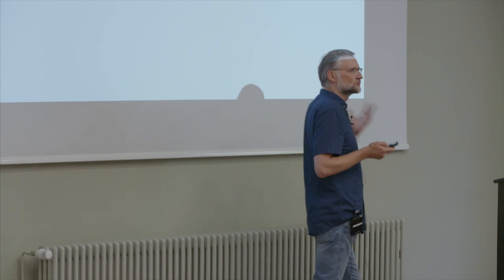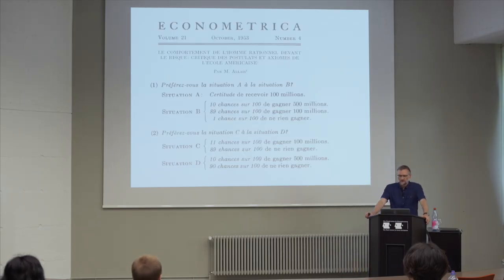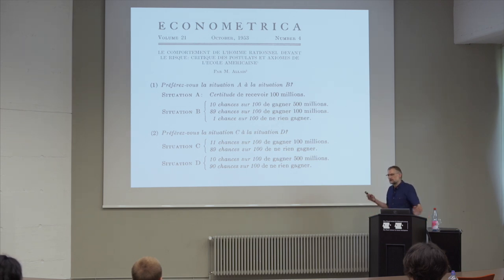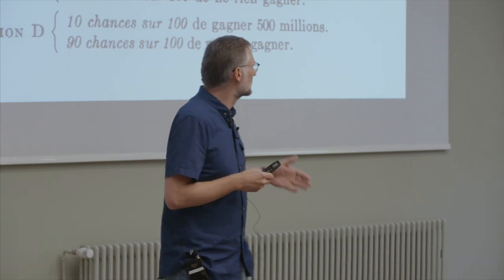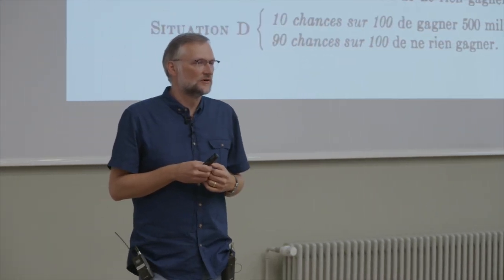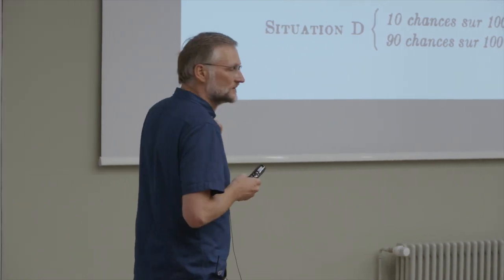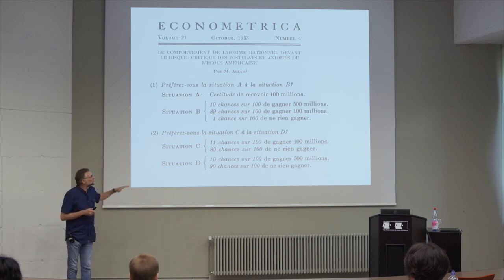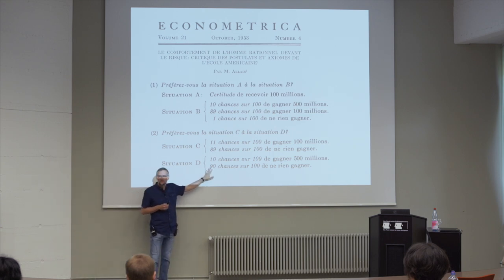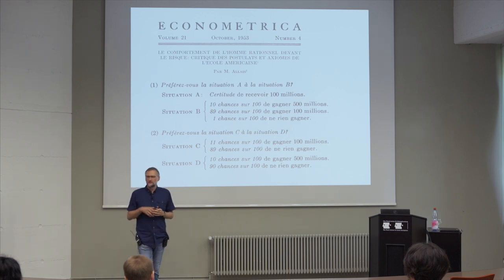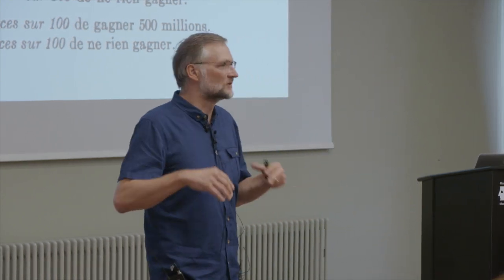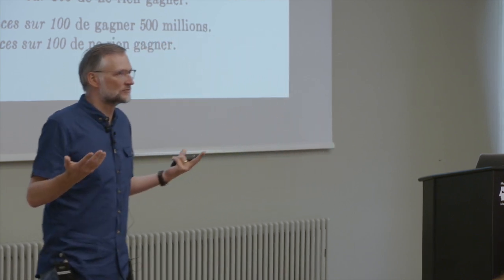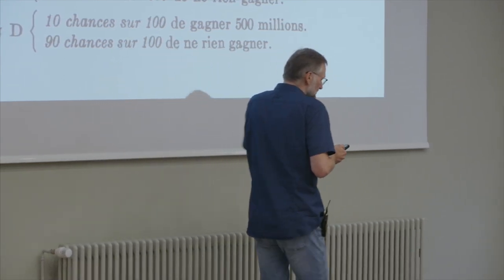Before we go to why that may be possible, let me introduce what I mean by description and experience. Here's one of the most famous description-based studies in the history of decision science — a paper published in Econometrica by Maurice Allais. He was one of the most outspoken critics of expected utility theory and showed empirically that a lot of choice behaviors are inconsistent with expected utility theory. This is decision from description: you see two choice situations, all outcomes and all probabilities are fully described. As an experimenter, I give you all the information on a silver platter and ask you to make a choice. There's no learning, no search, no uncertainty — it's just risk.